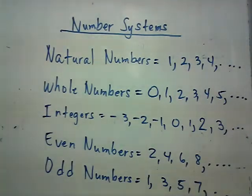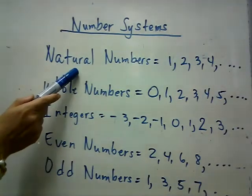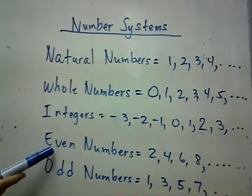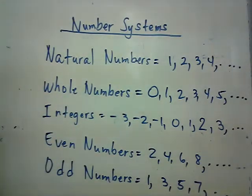So that's it for our number systems. Once again, we have the natural numbers, whole numbers, integers, even numbers, and odd numbers.